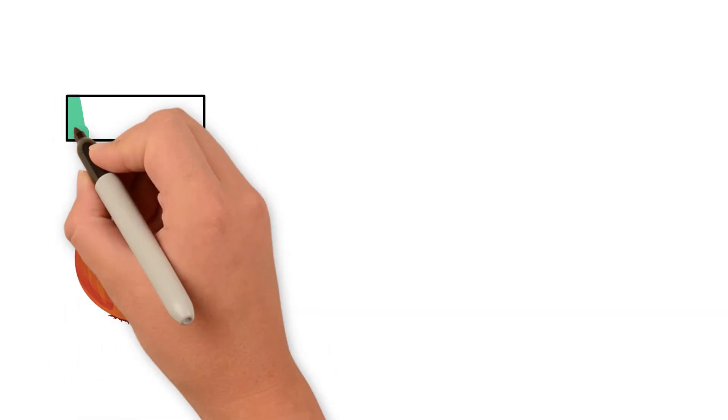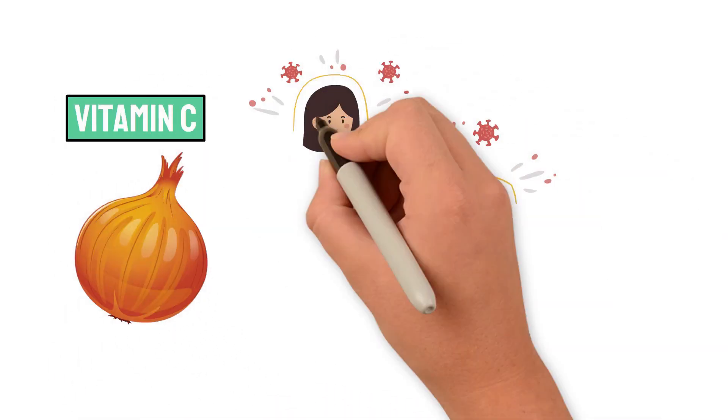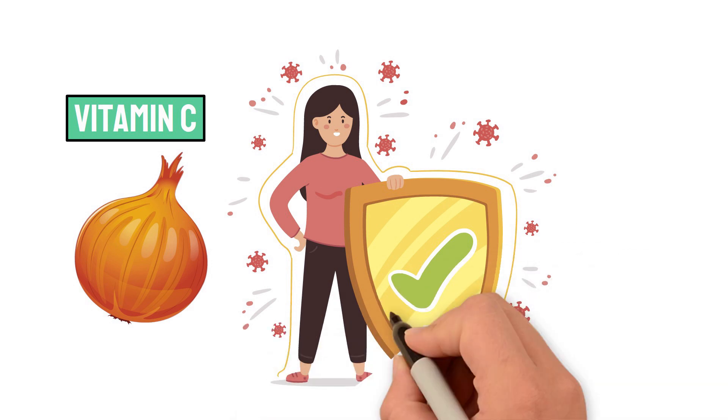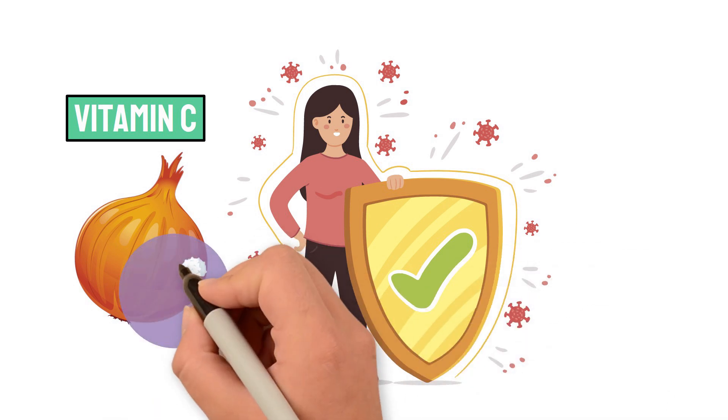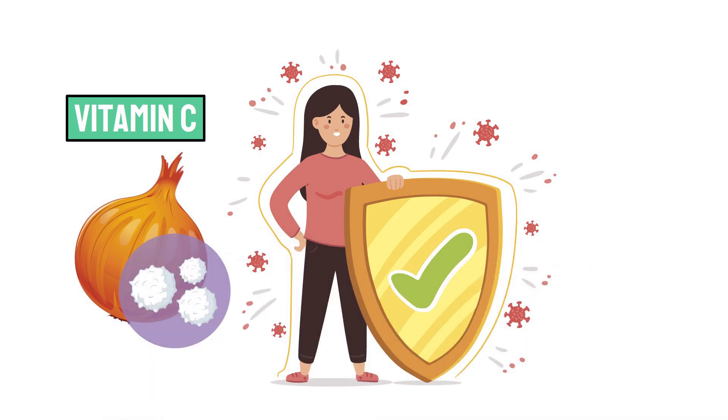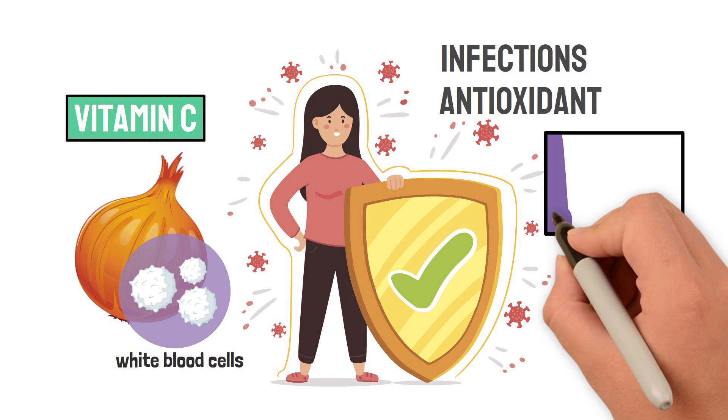Onions are also rich in vitamin C, an essential nutrient known for its immune-boosting capabilities. Vitamin C plays a vital role in supporting the production of white blood cells, which are responsible for fighting off infections.